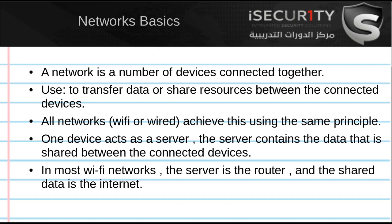So basically, what is a network? A network is just a number of devices connected together. They are connected together for a reason — so that they can share data. This data can be files, can be resources. For example, your home network usually you use it to just access the internet, which you can look at as a resource or as a source of data.